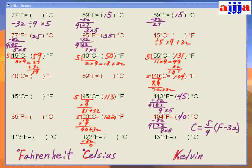You still remember Fahrenheit to Celsius? That's right — minus 32 first. So 122 minus 32 is 90. Then divide by 9, which is 10. Now the final step: times 5, which is 50. So we can see the right answer is 50 — right there! 50 degrees Celsius equals 122 degrees Fahrenheit. Fantastic!